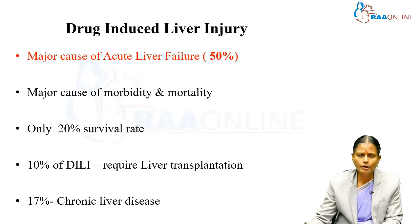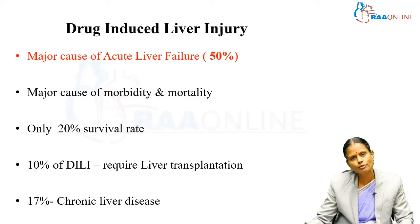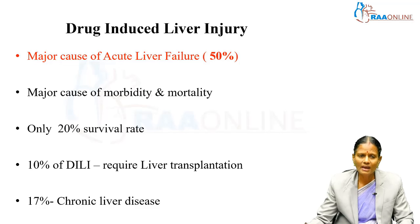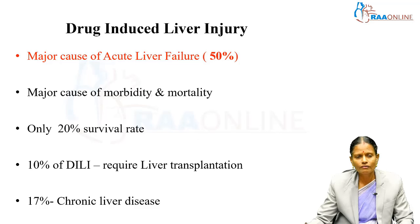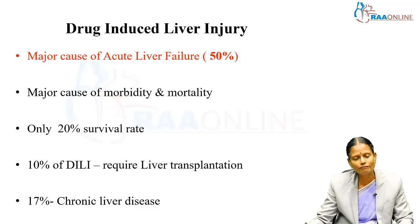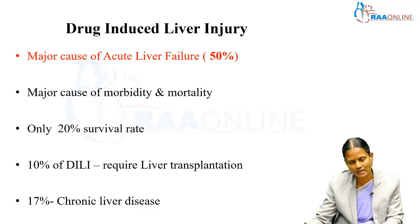Drug-induced liver injury is the major cause of acute liver failure, constituting about 50%, and it is also the major cause of morbidity and mortality with only a 20% survival rate. Of this, 10% of drug-induced liver injury cases require liver transplantation, and 17% have to live through their life with chronic liver disease.